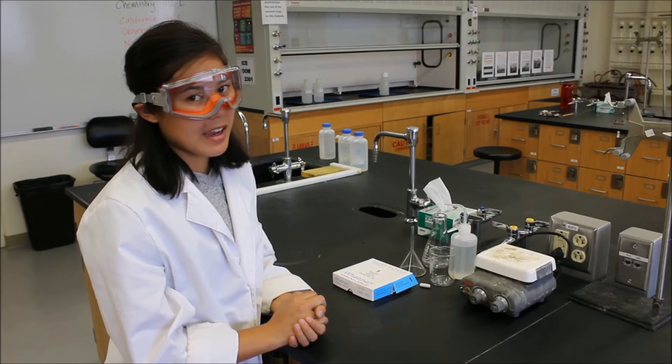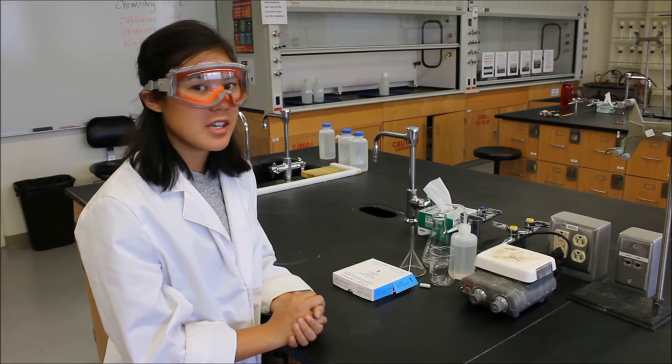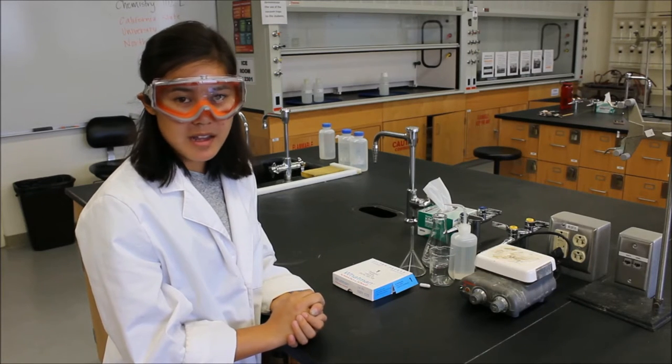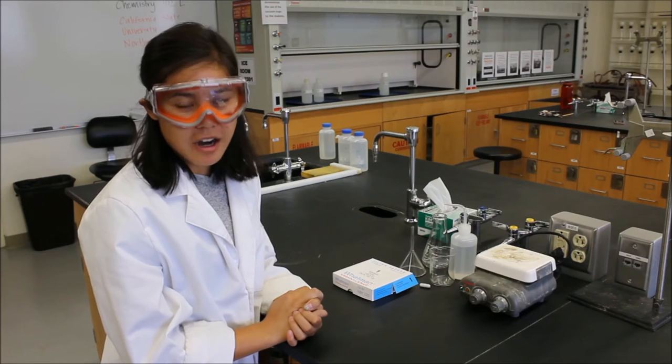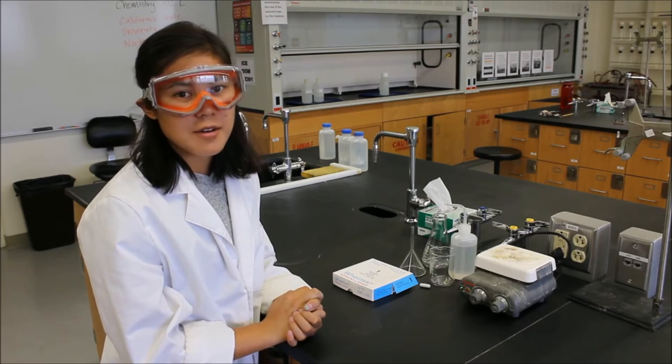Welcome back to Chem 102 Lab at California State University Northridge. Today we'll be looking at experiment one, making iron and copper complexes with oxalate.